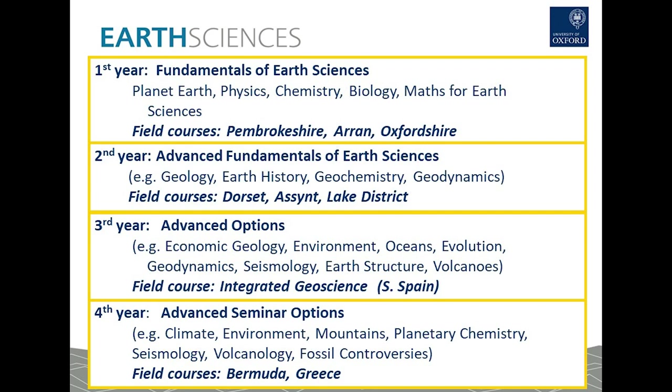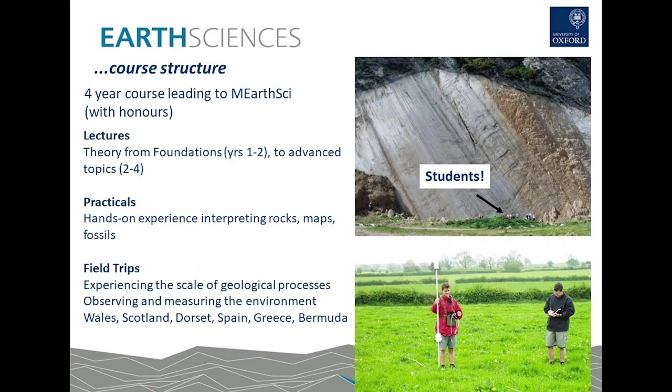And one important part of our course is the field work, because we feel that observing earth processes and documenting our processes in their natural settings is a key part of understanding how the earth works. And so there are field courses in every year of our course. The moment they cover localities in Wales, Scotland, in southern Britain, in Spain, in Greece and in Bermuda. These may change in the future, but the goal behind them will always be the same. The goal will be to use observations and document things we can see in the field in order to understand earth processes.